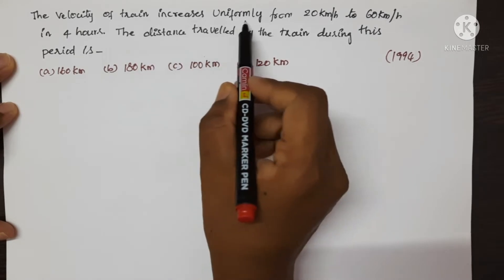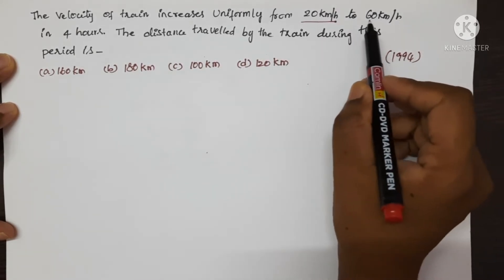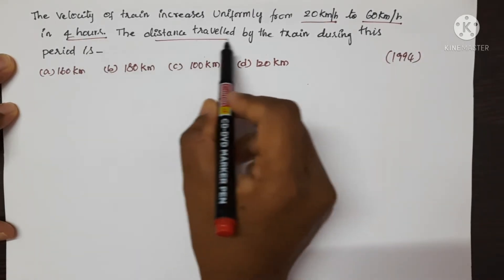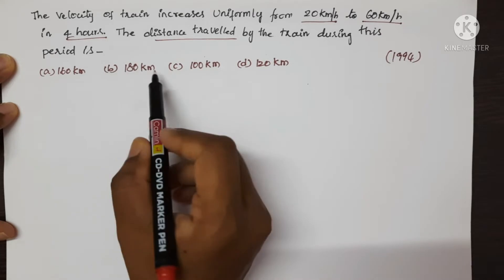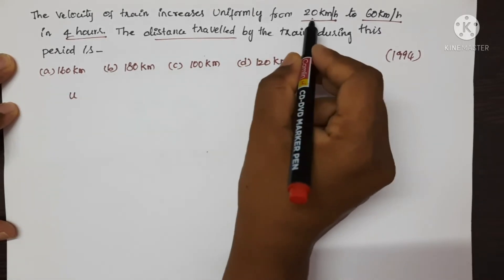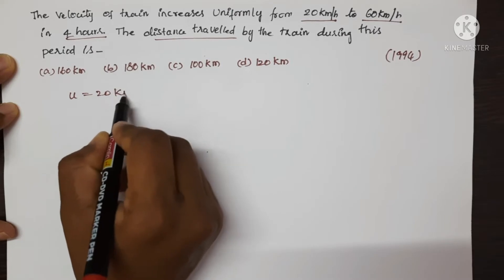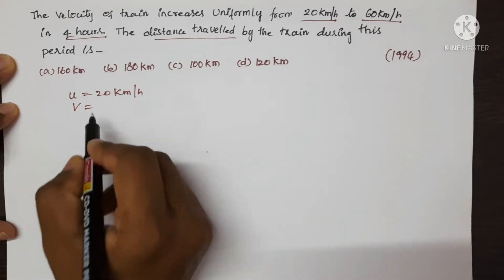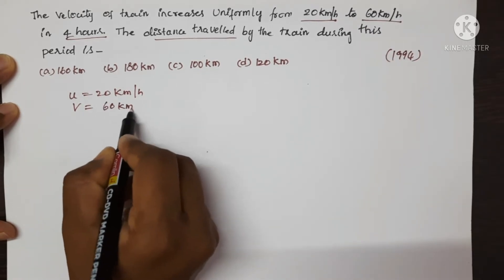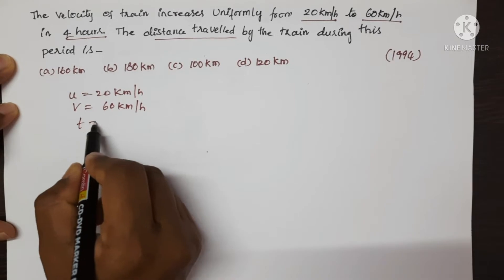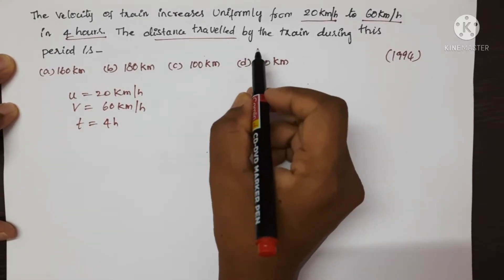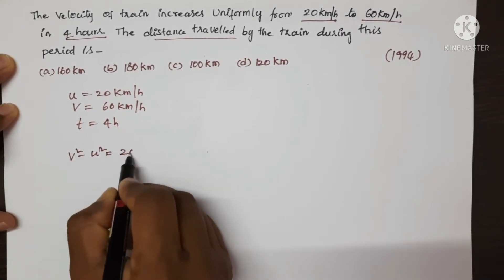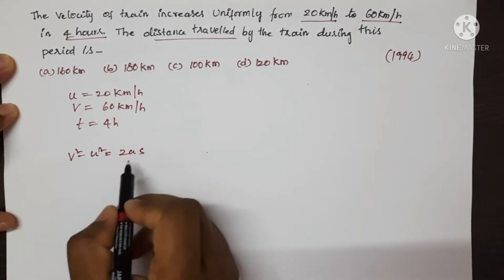The velocity of a train increases uniformly from 20 km per hour to 60 km per hour in 4 hours. The distance travelled by the train during this period is to be found. Given: initial velocity U = 20 km/h, final velocity V = 60 km/h, and time taken = 4 hours. We need to find the distance travelled. Consider the equation V² − U² = 2AS, and first we find A.